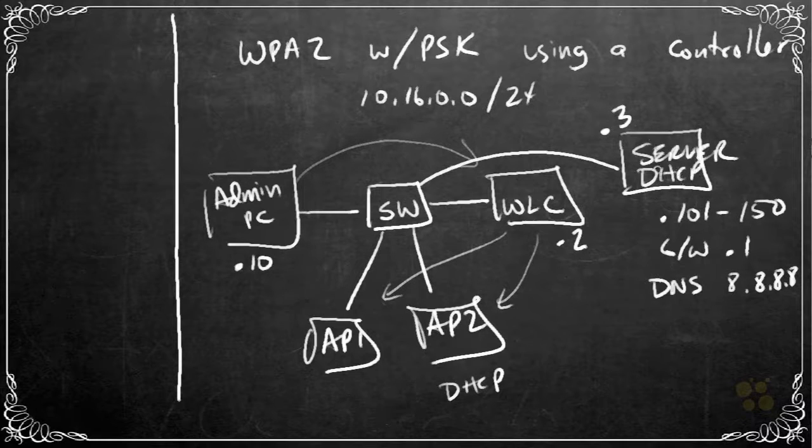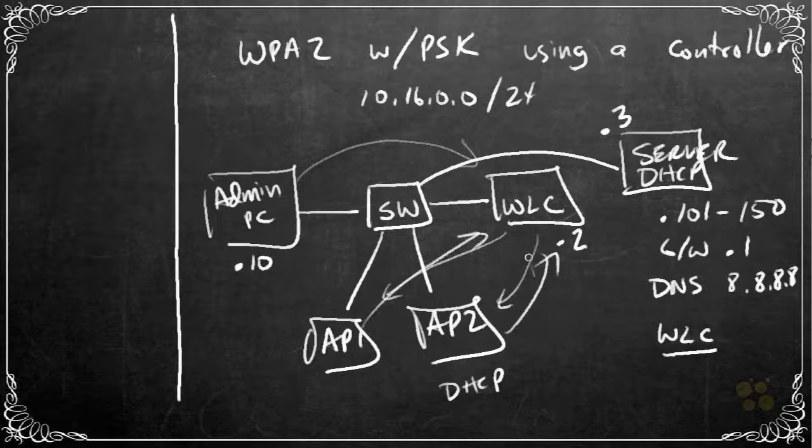Also, as part of the DHCP server configuration, we could hand out the IP address of the wireless LAN controller. And that way when these guys boot up, get an IP address, they could basically check in with the wireless LAN controller and start to follow the instructions of that controller. So for the controller's address that we're going to hand out, it's going to be .2, which is the IP address of the wireless LAN controller.